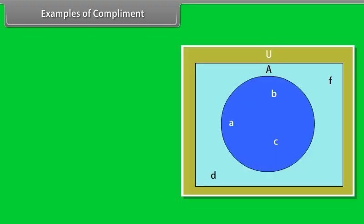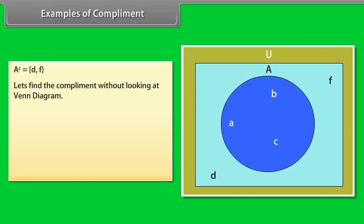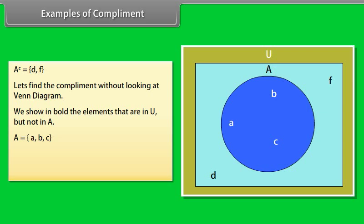Examples of complement. Take a close look at the figure. D and F are in U but they are not in A. Therefore, the complement of A = {D, F}. Let's find the complement without looking at the Venn diagram. We show in bold the elements that are in U but not in A. A = {A, B, C}. U = {A, B, C, D, F}. So, the complement of A is D and F.